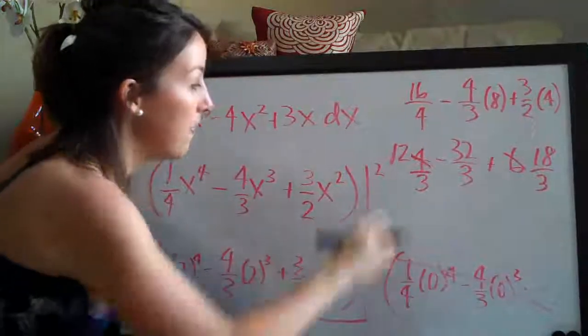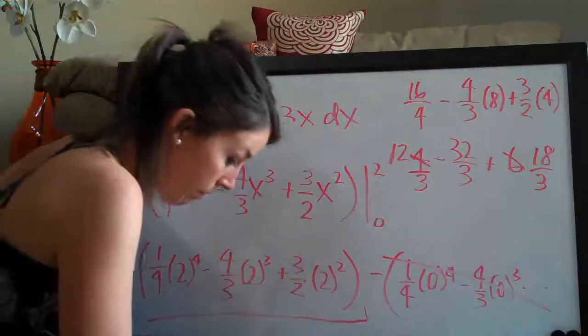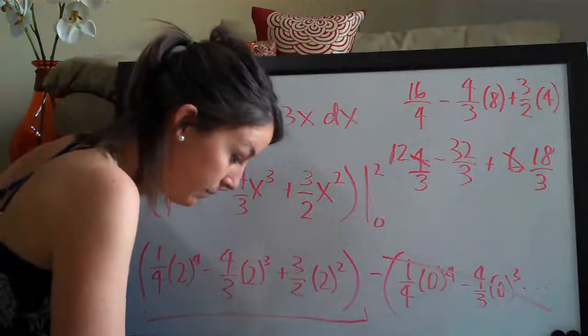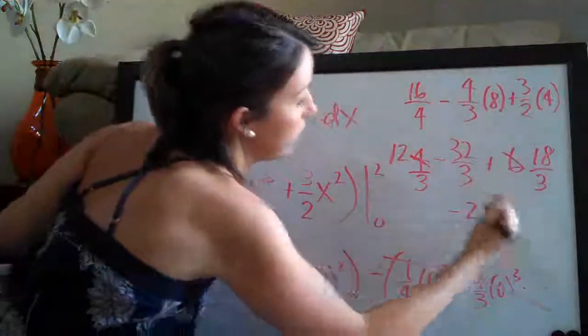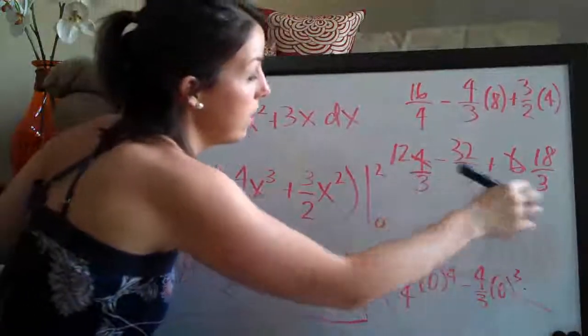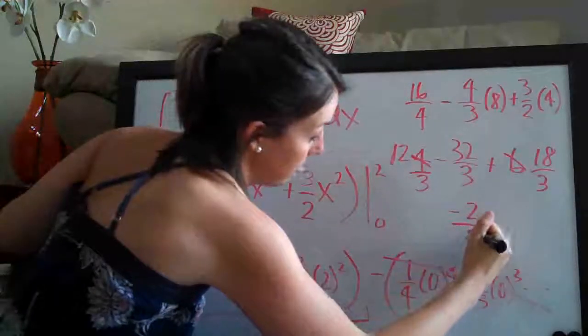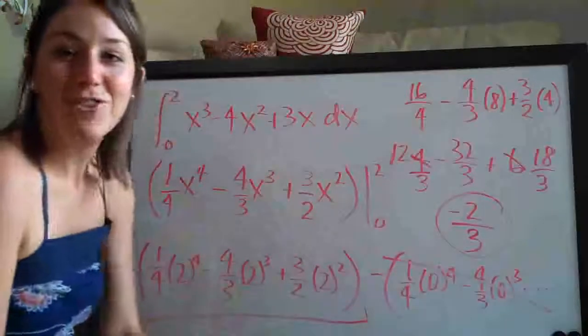So now we have 12 minus 32 plus 18 which is negative 2, so the numerator simplifies to negative 2. And since we have a common denominator with 3 on the bottom of each of these, we can put 3 on the bottom. And our final answer is negative 2 thirds.